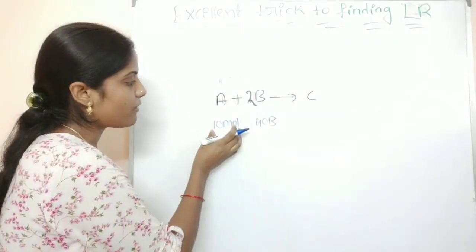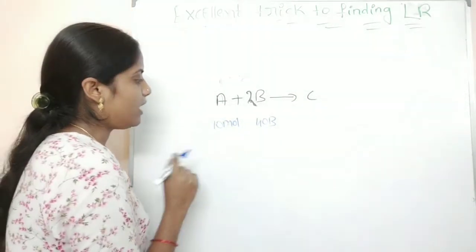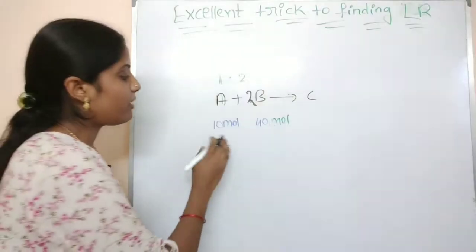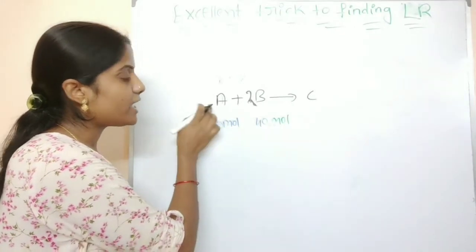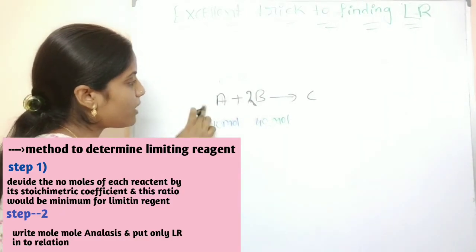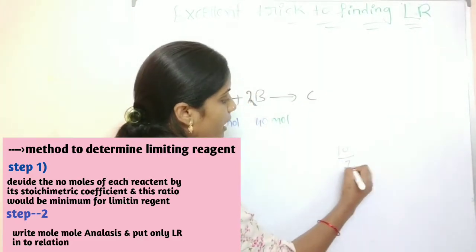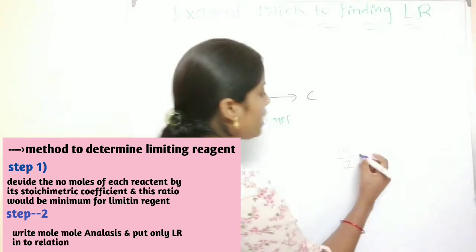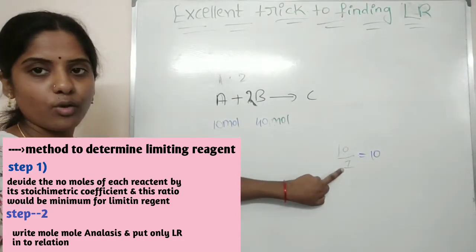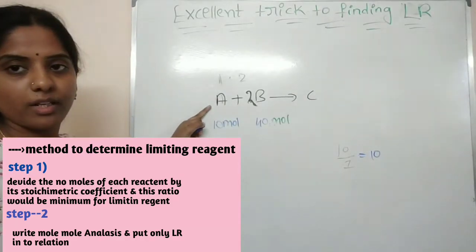So, 10 moles of A reacted with 40 moles of B — which is the limiting reagent? The trick is: divide the number of moles of each reactant by its stoichiometric coefficient. For A, we have 10 moles and its stoichiometric coefficient is 1. So 10 divided by 1 equals 10.